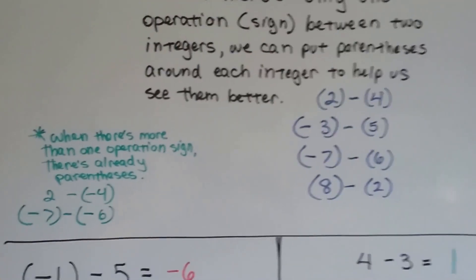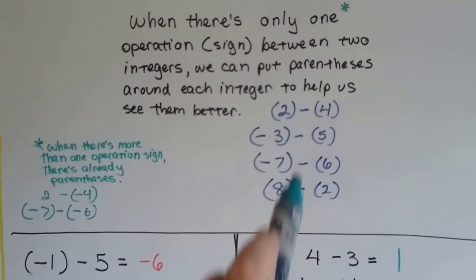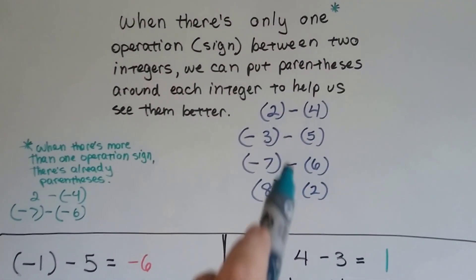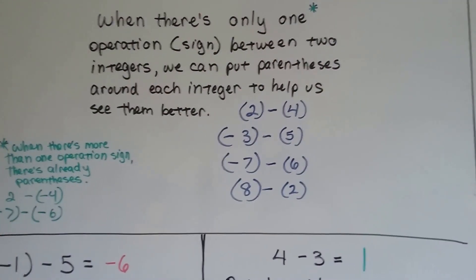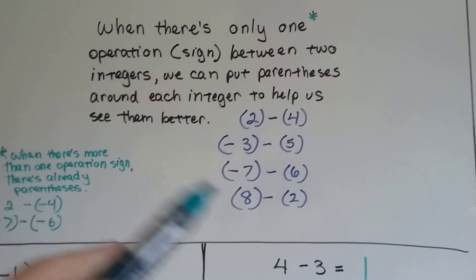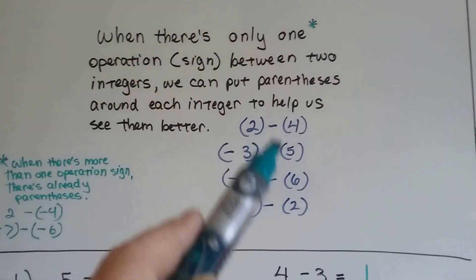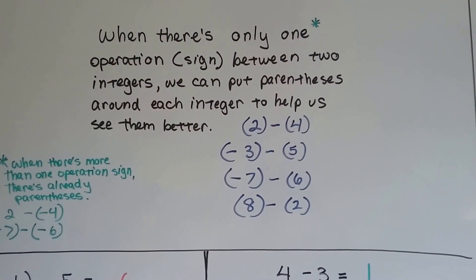So when you just see one operation sign, like a plus or a minus, coming down the middle of two integers, and you're having trouble looking at this and it's like your brain is going all crazy. I'm getting so tired of looking at these numbers. Just put a little parentheses around each one and it'll help you see them better.